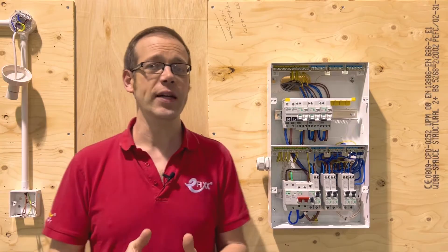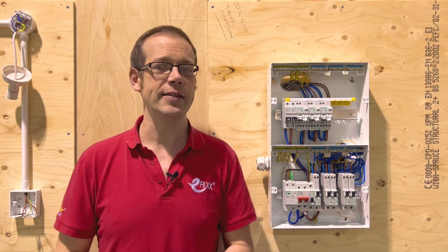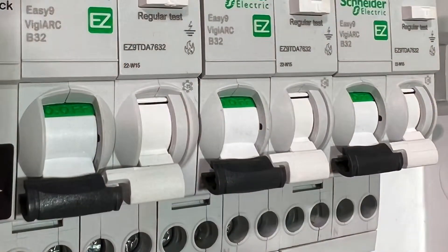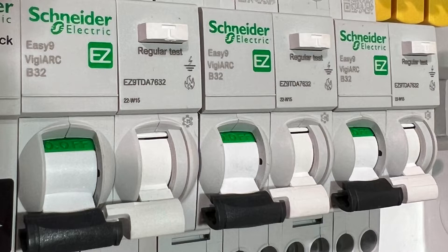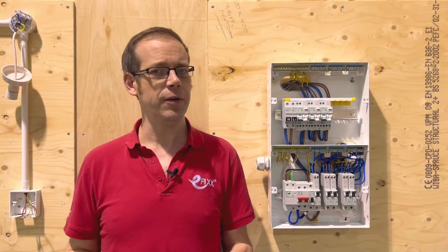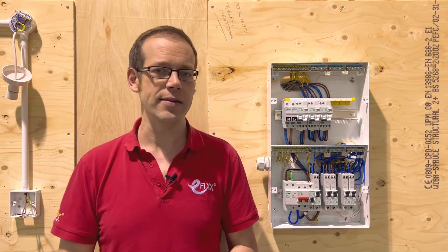In this video we turn our attention to what is probably the newest device in this series, at least to viewers in the UK, the arc fault detection device or AFDD. So what is an AFDD and what does it do? Well to answer that question we need to think about the kind of fault that it's protecting against.